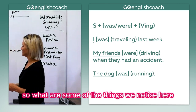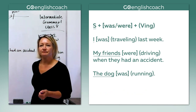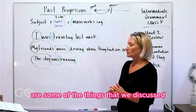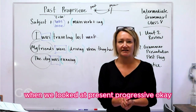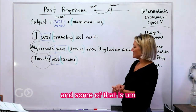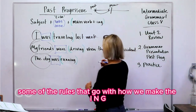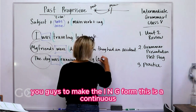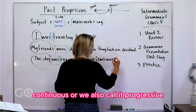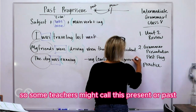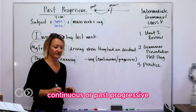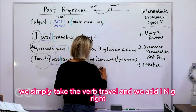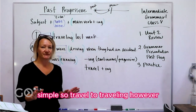Some of the things we notice here are similar to what we discussed with present progressive. Some of the rules that go with how we make the ING form — this is a continuous, or progressive form; some teachers might call it present or past continuous or past progressive, those are the same thing. To make the ING form, we simply take the verb 'travel' and add ING. Simple — travel becomes traveling.